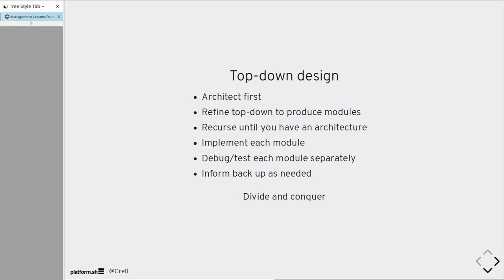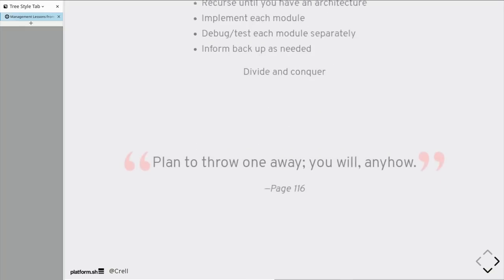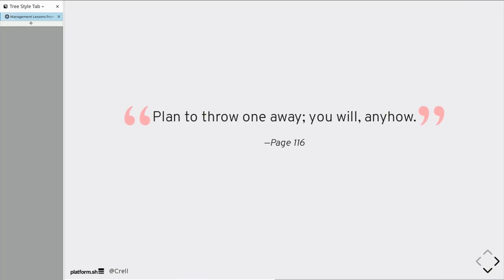Basically, divide and conquer, which is the standard approach in any scientific endeavor. Take a hard problem, break it up into a bunch of simple problems, and then put them back together. He also notes, plan to throw one version away, you will anyway. So you might as well plan for it. Basically, you don't know what you're going to do wrong until you've already done it wrong. It takes doing it wrong to figure out what right even means.